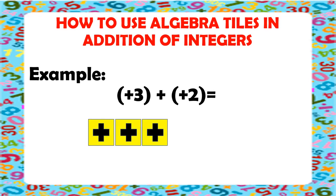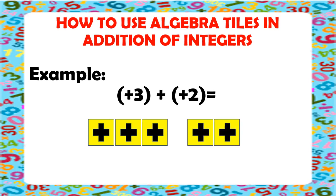Now, we are adding positive 2. So, positive 2 means we have 2 yellow tiles. Let's draw 2 yellow tiles. So, we have all the tiles drawn in. Let's count how many tiles we have altogether — we have 1, 2, 3, 4, and 5. So, we have 5 yellow tiles all together. And yellow means positive. Therefore, positive 3 plus positive 2 is equal to positive 5.